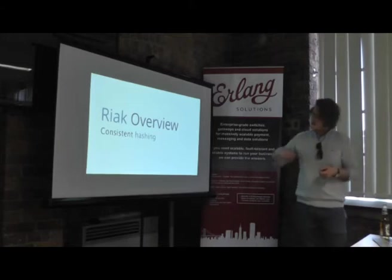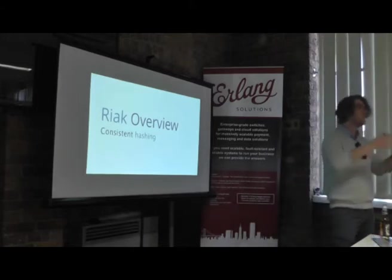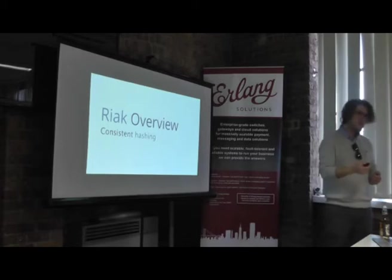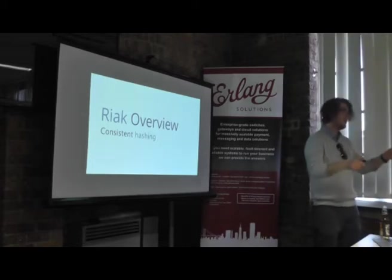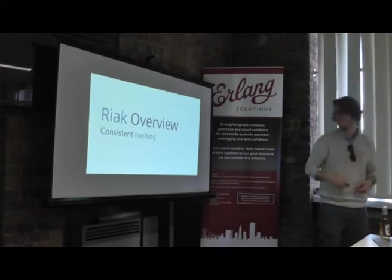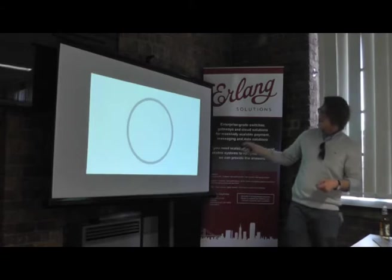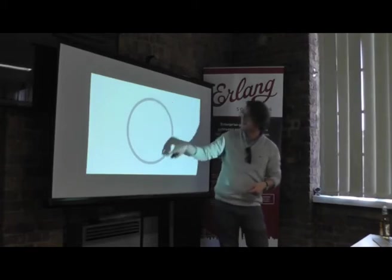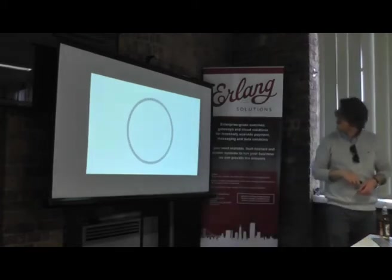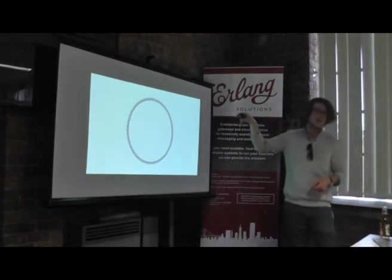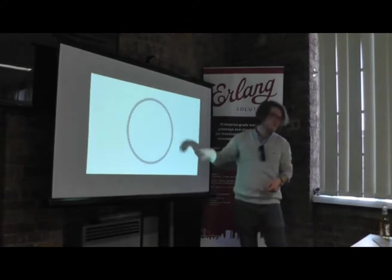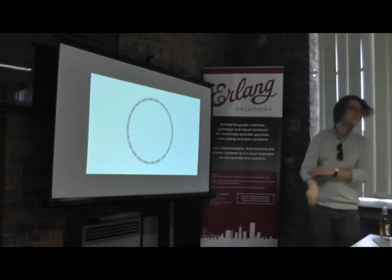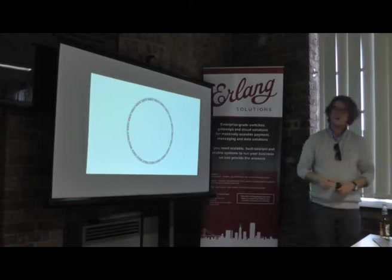A brief review of the consistent hashing mechanism: how do we distribute data across nodes? A Riak cluster is made up of four to five nodes and we need a mechanism to deterministically route data to nodes that minimizes data movement. We take an integer space of 2 to the 160th power — starting at zero and going around the ring — and subdivide that into a power-of-2 number of partitions. We then distribute these partitions as evenly as possible across all nodes.